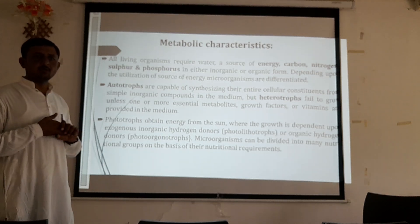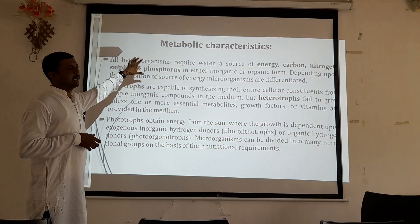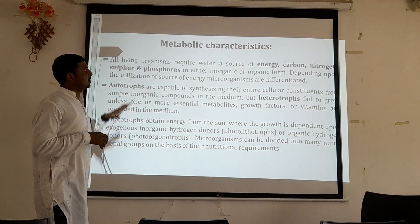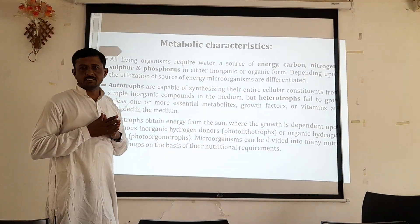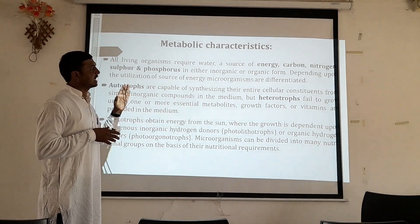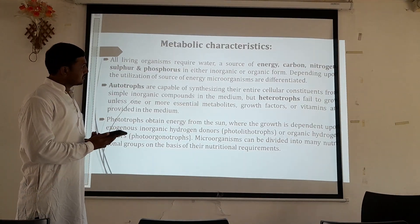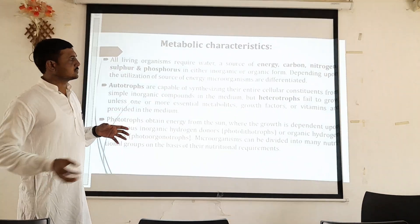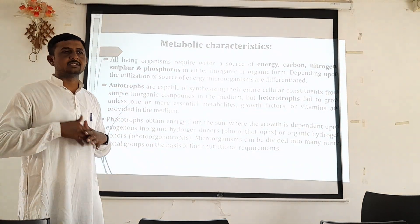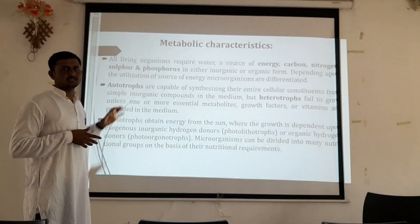Metabolic characteristics involve the metabolic system in which all processes are carried out. By using metabolic characteristics, we can differentiate organisms on the basis of their metabolism. All living organisms require a source of energy, carbon, nitrogen, sulfur, and phosphorus, in either inorganic or organic form, to carry out their metabolic processes. Depending upon the source and utilization of energy, microorganisms are differentiated and categorized.